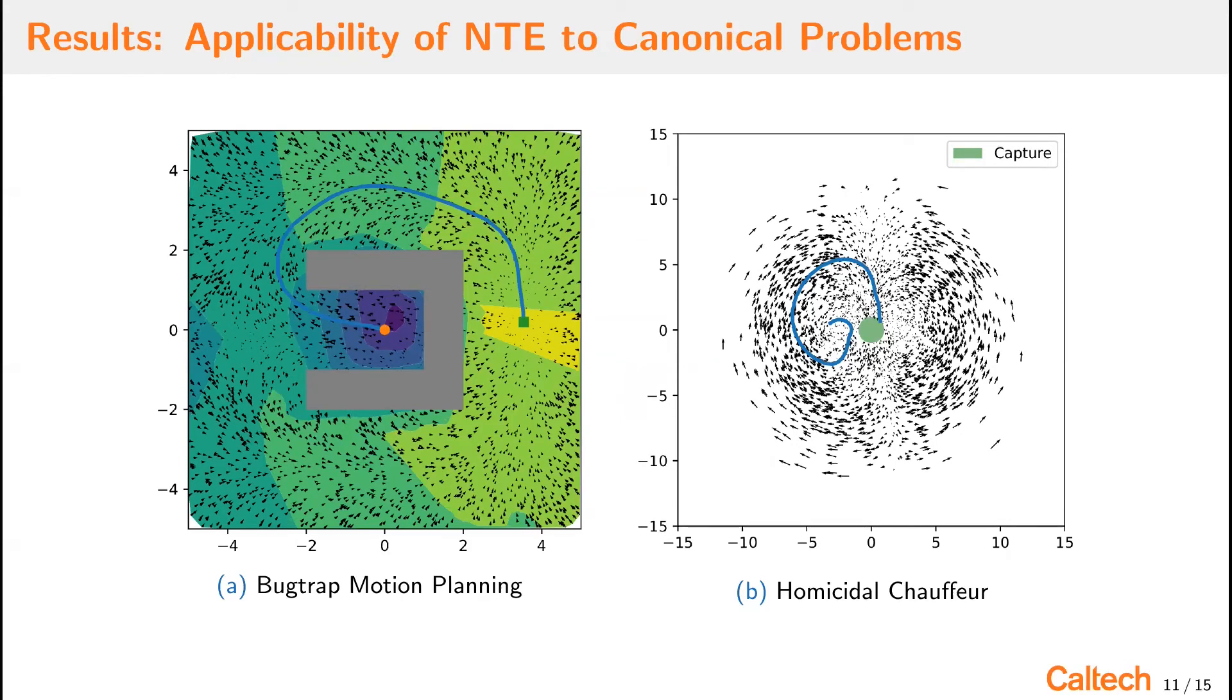However, this is just a single-agent Markov decision process, and we wanted to move to a differential game setting. And to test NTE in this setting, we chose to study the homicidal chauffeur problem, which is a canonical differential game with a known analytical solution. The plot that we're showing here is the reduced space for this problem. And the trajectory of the NTE is shown in blue, which matches the known analytical solutions. So in these two examples, by matching NTE with intuitive and analytical solutions, we show that NTE works for Markov decision processes and differential games.